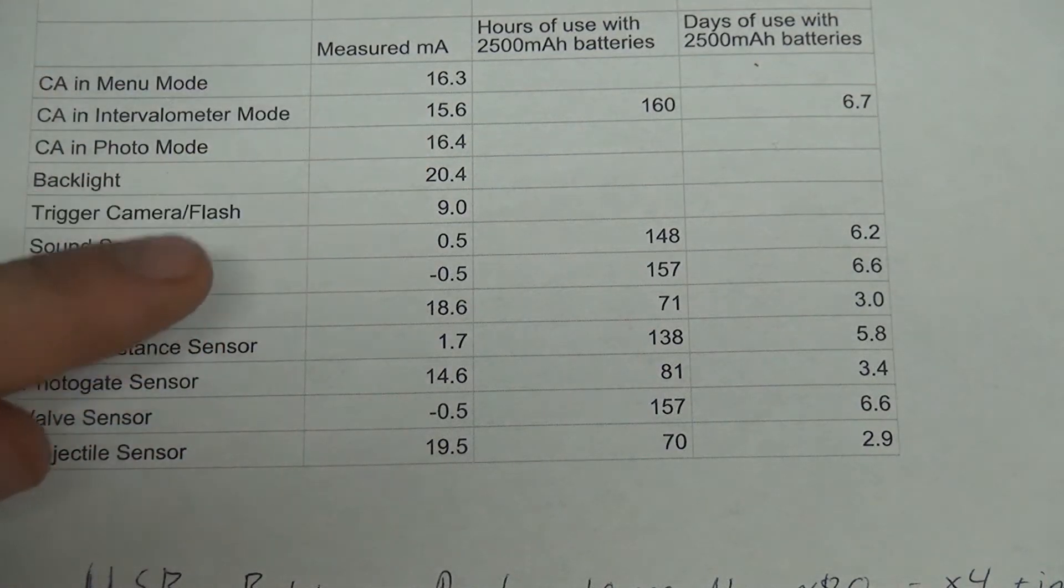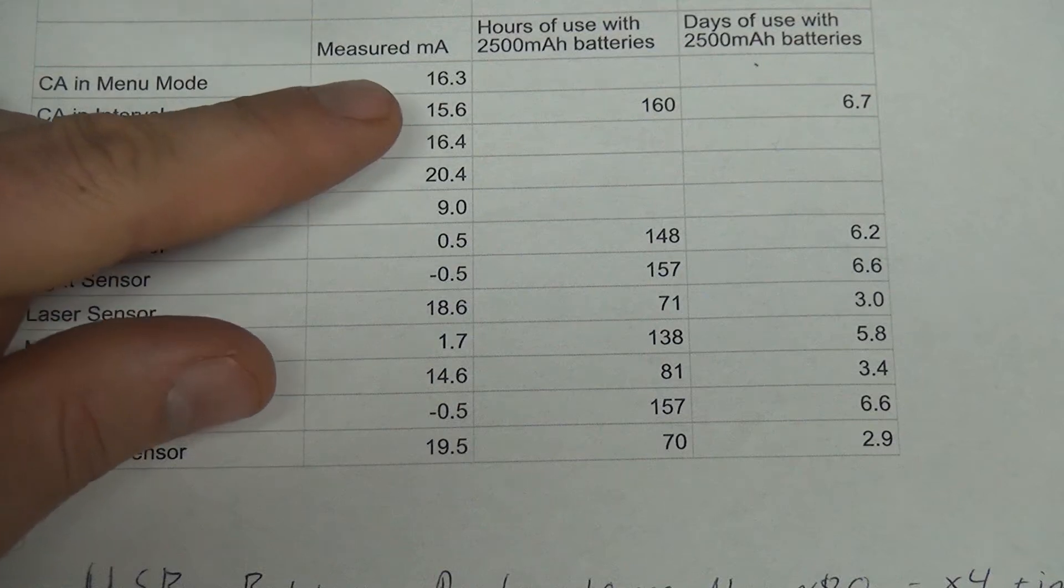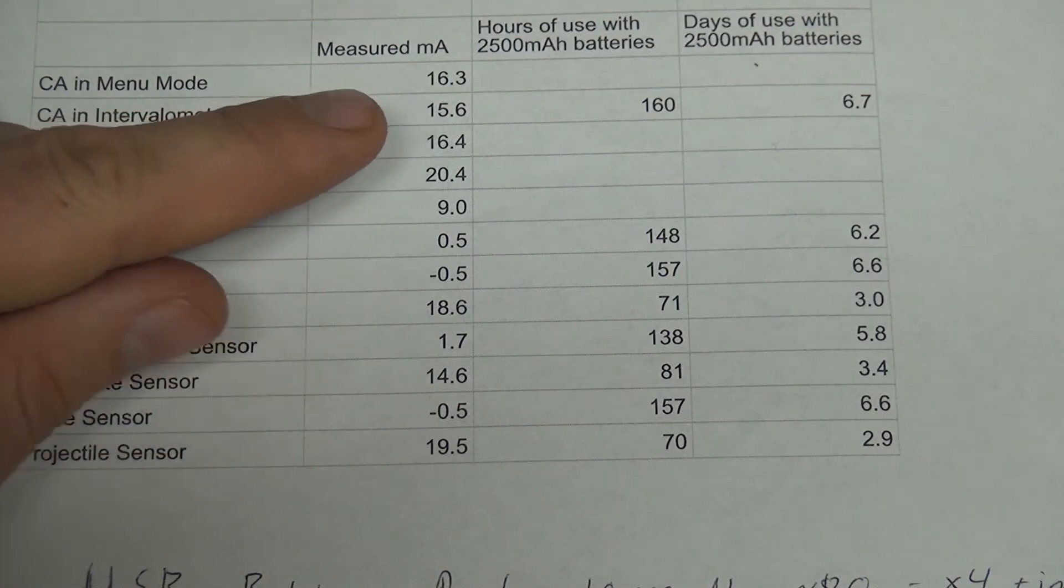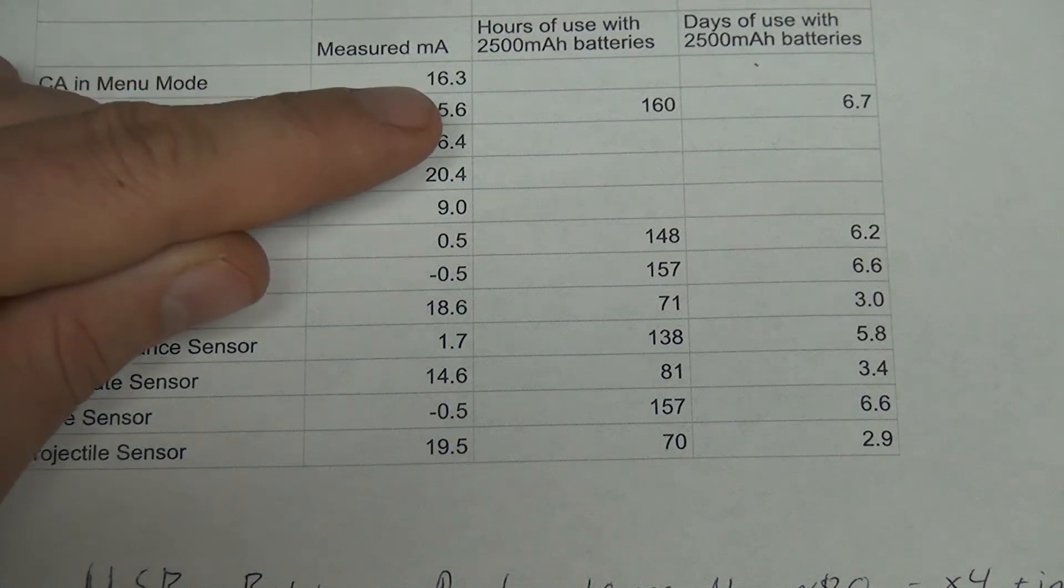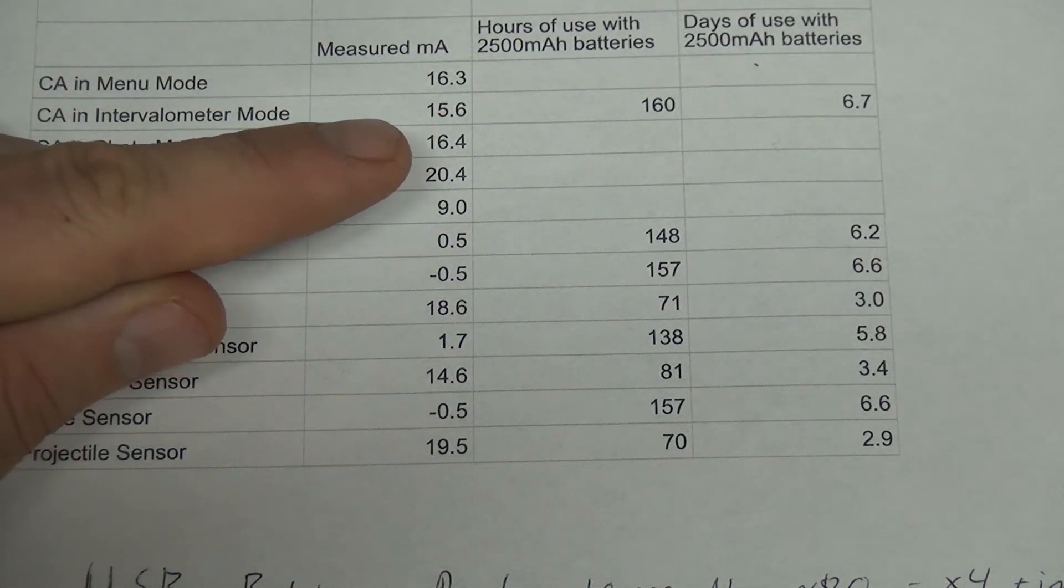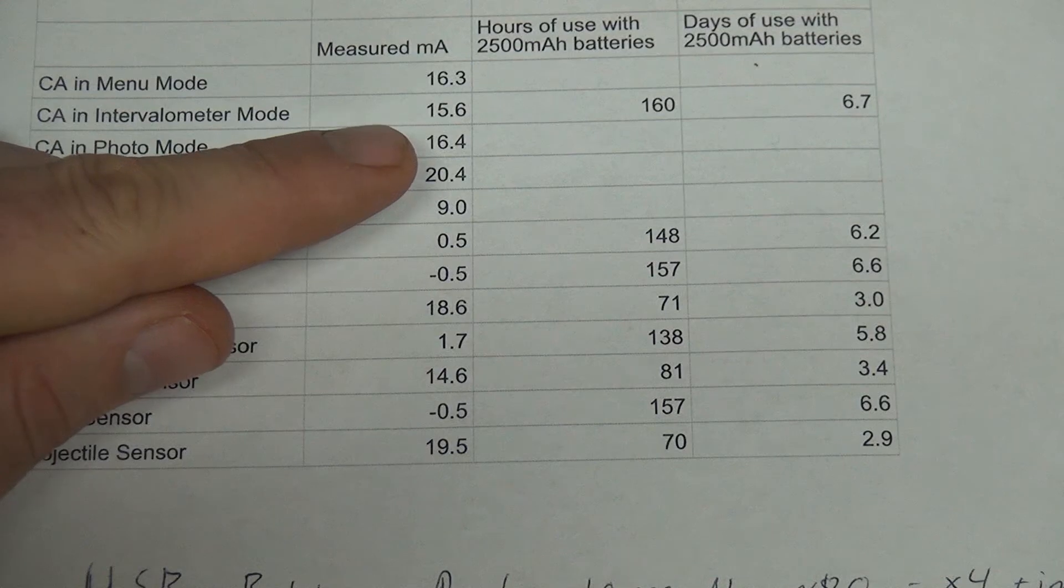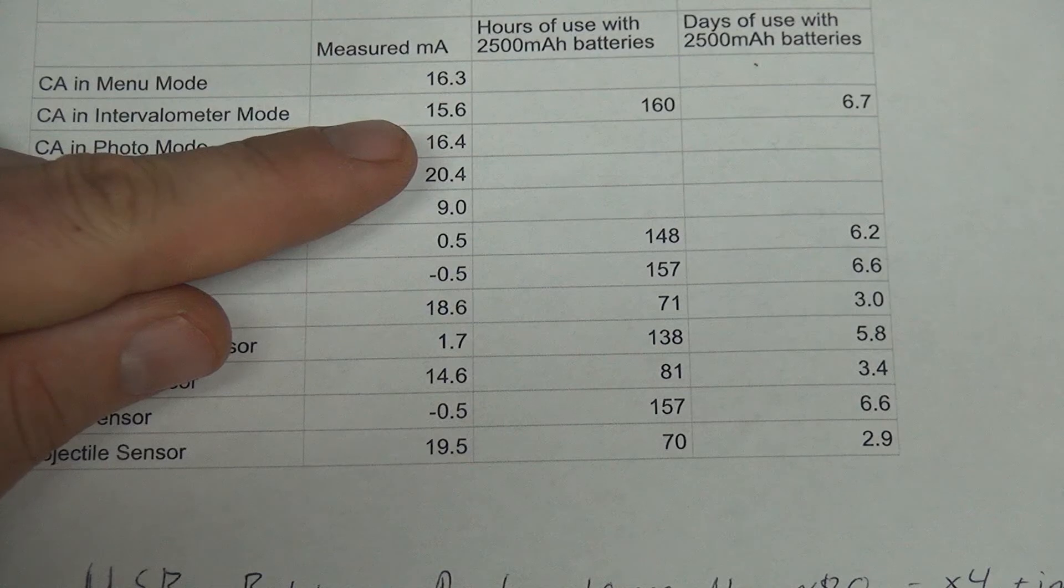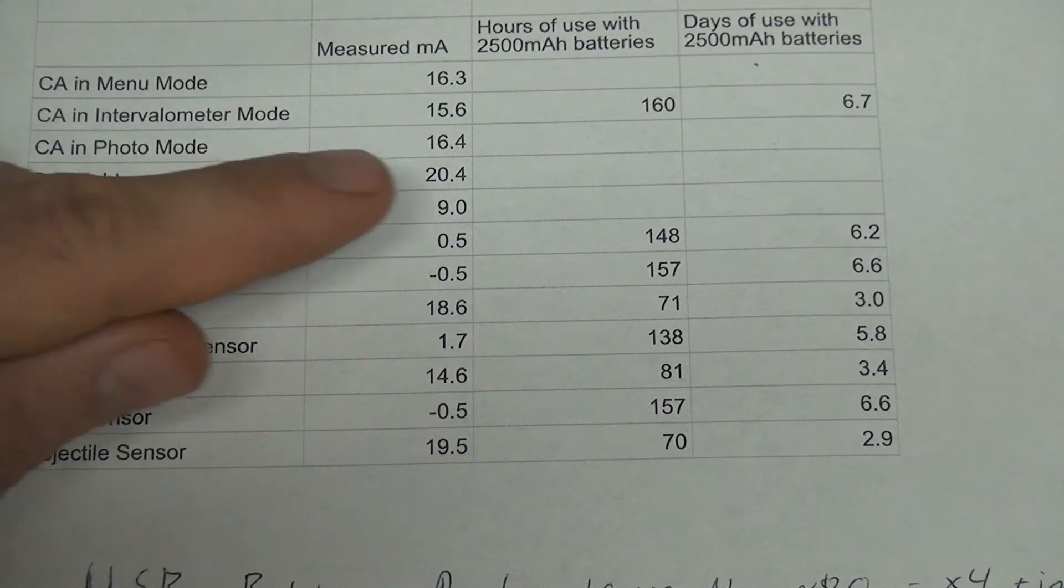These first three options show base level power consumption. The Camera Axe in menu mode where you're using the buttons to control things is around 16.3 milliamps. In intervalometer mode, it's 15.6. I suspect the reason for that is I'm putting the microprocessor to sleep quite a bit in intervalometer mode.